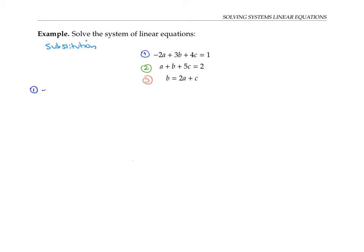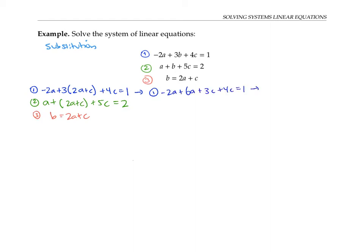So my first equation becomes negative two A plus three times (two A plus C) plus four C equals one. And my second equation becomes A plus (two A plus C) plus five C equals two. I'll just carry down my third equation. Now let me simplify my first equation a bit. I'll distribute and group like terms: minus two A plus six A is four A, three C plus four C is seven C, and that equals one. I'll also simplify the second equation by getting rid of the unnecessary parentheses and combining like terms.